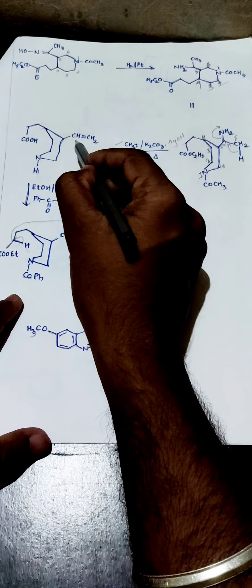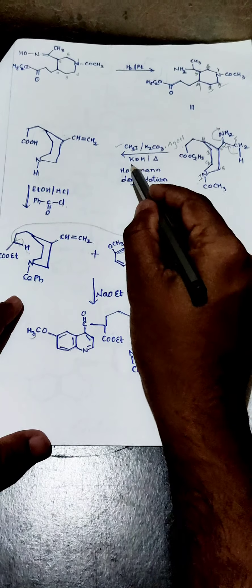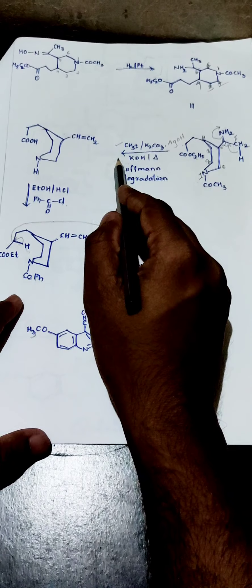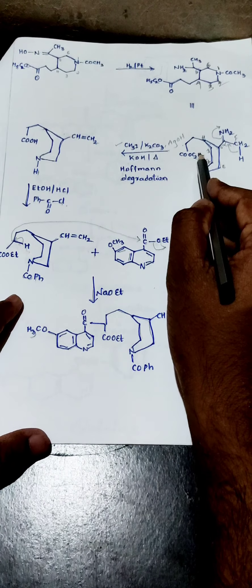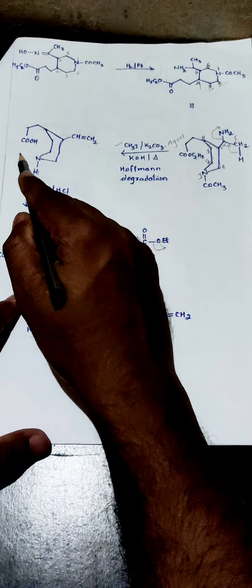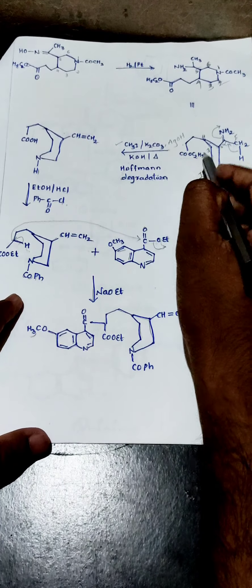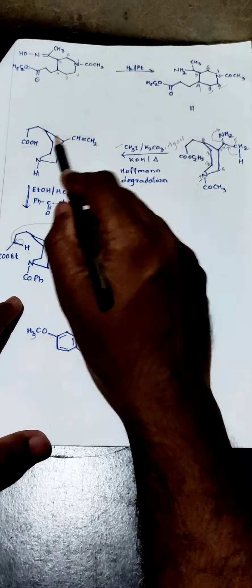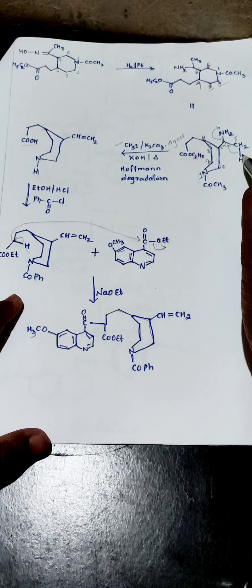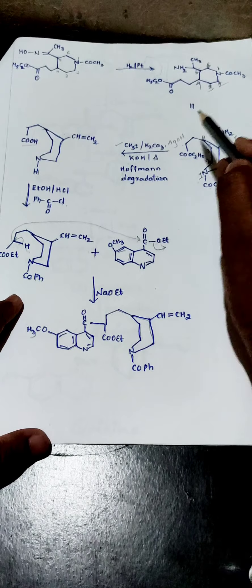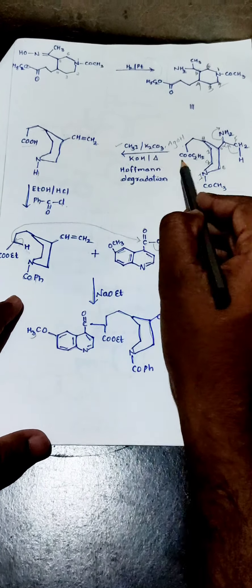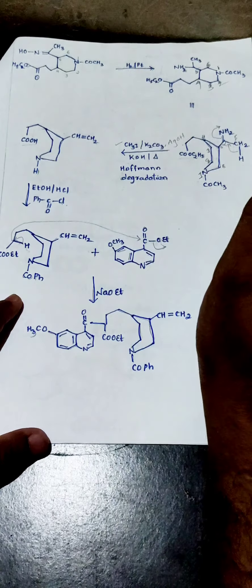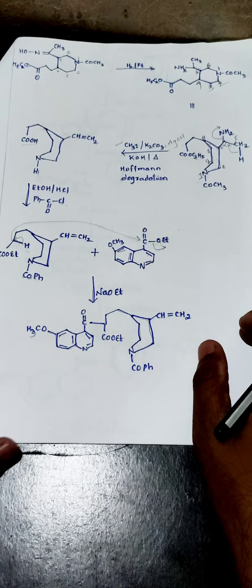When Hofmann degradation is done, the nitrogen is removed and that group is converted to a vinyl group. Further, I do hydrolysis of the ester — when I hydrolyze the ester, I get the alcohol and acid, so the –COO–C2H5 group is converted to –COOH. So there are two major changes in this step: introduction of the vinyl group by Hofmann degradation and hydrolysis of the ester forming the –COOH group.